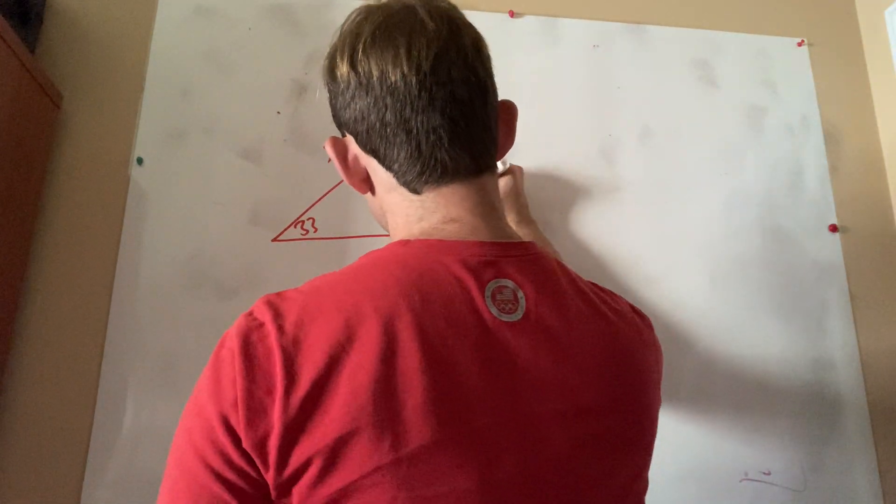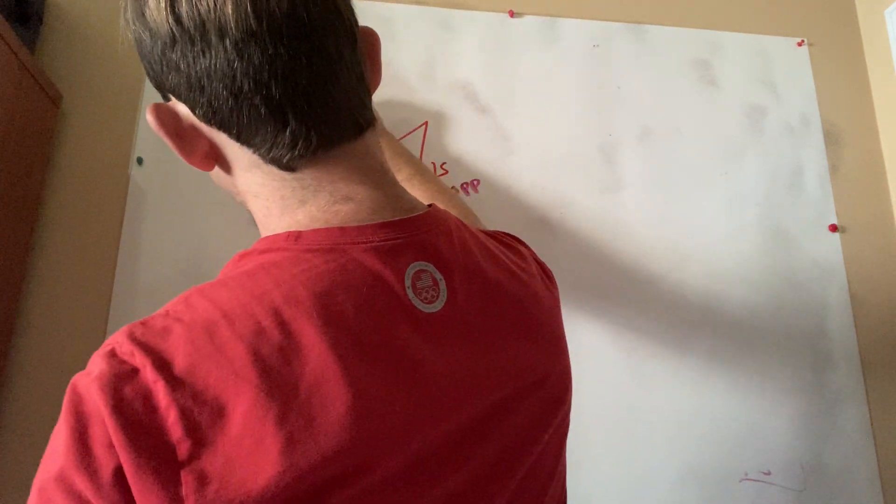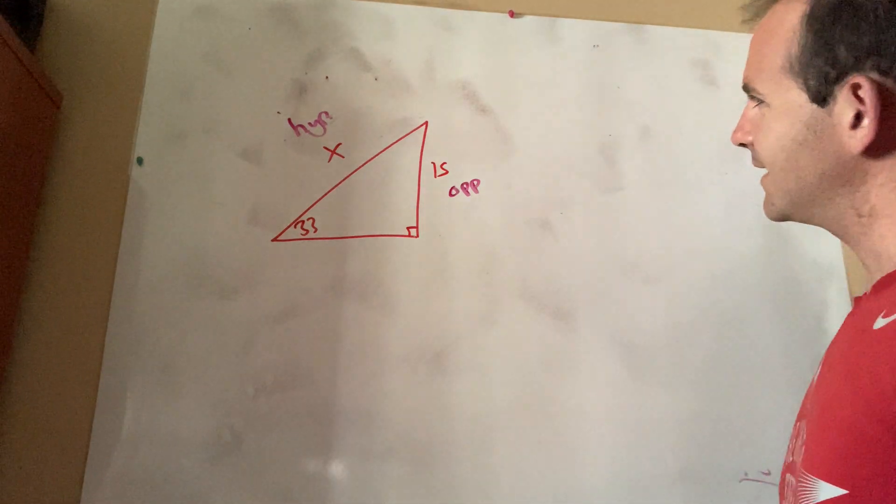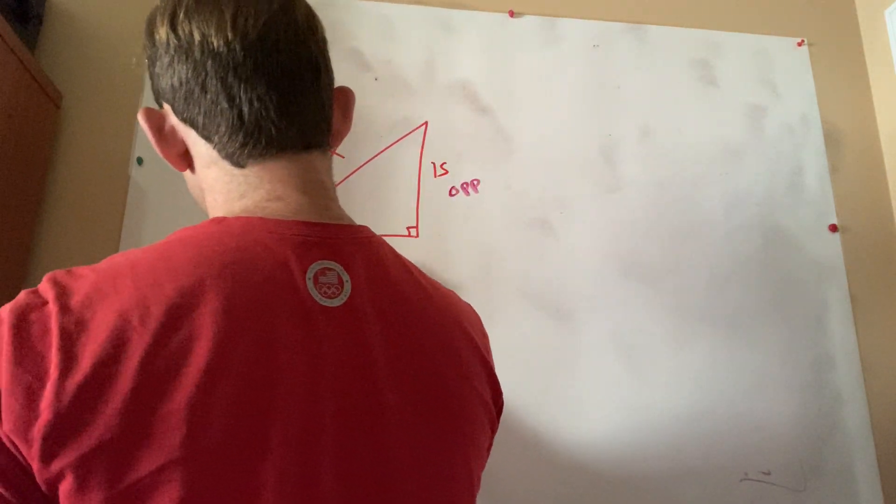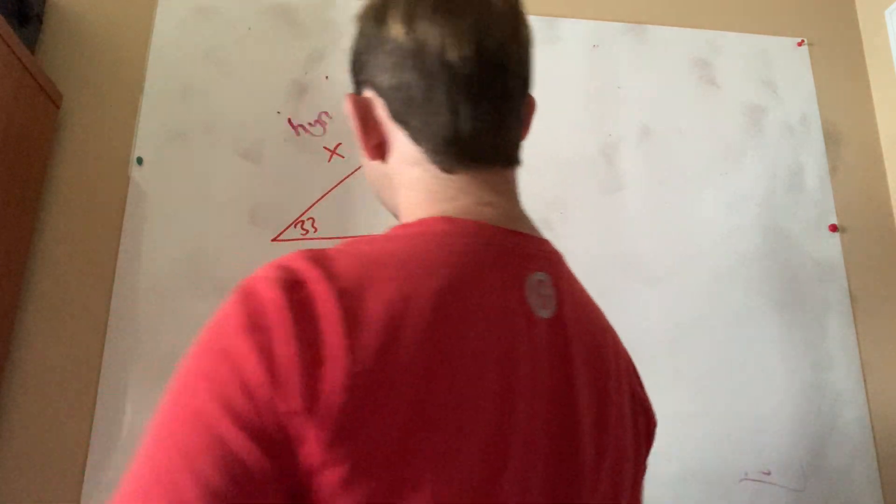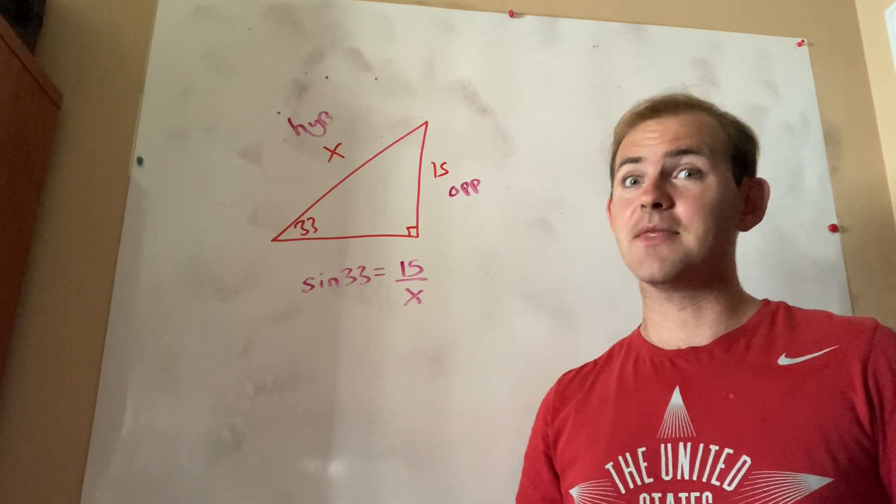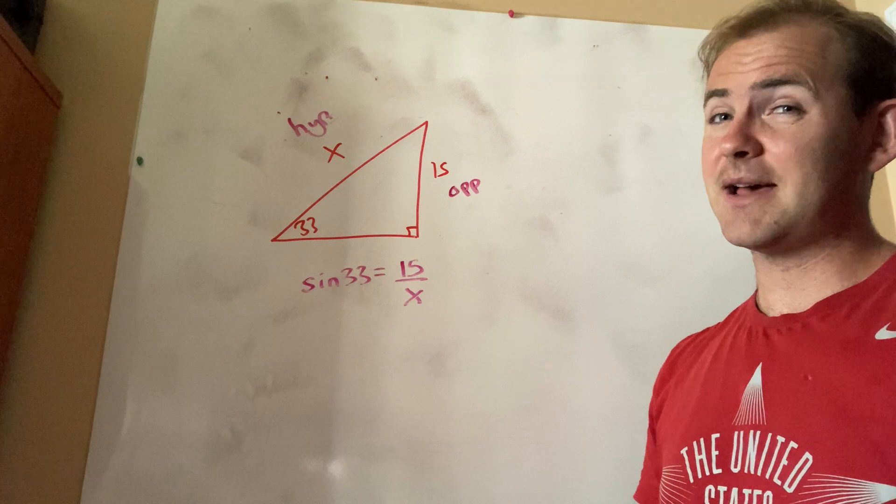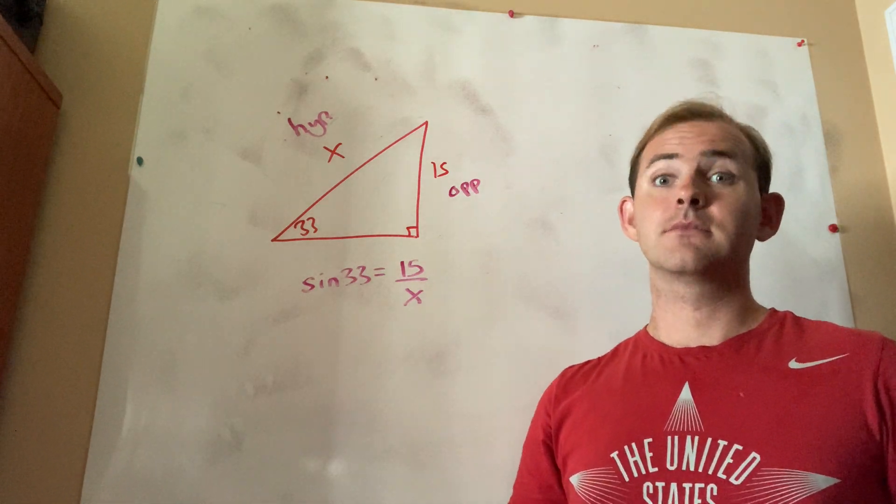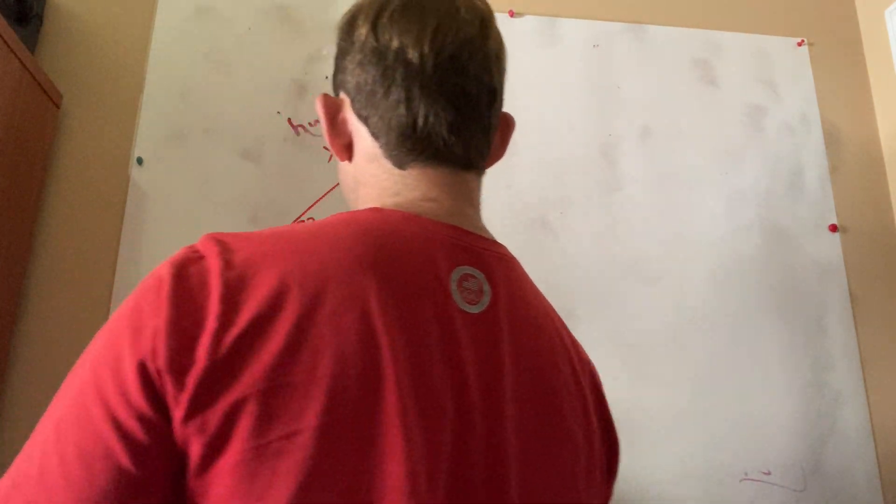We're going to start this problem like we did any of the other ones, and we're simply going to label. So in this case, 15 is the opposite, because it's across. And this one that I need is across from the right angle. So that's got to be the hypotenuse. So opposite hypotenuse. This is starting to sound really familiar. That's got to be the sine ratio. So I'm going to set up an equation. Sine 33 equals 15 over X. Now, notice that this equation is a little bit different, because the X, instead of being on top, is on the bottom. That's not okay. We have to get it back on top somehow, or in the numerator somewhere. So let me pose this question to you. How do I get rid of a divided X? I would multiply both sides by X. When I do that, I get X sine 33 equals 15.